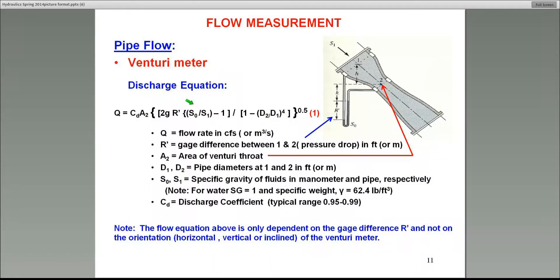A ratio of two specific gravities minus one. The two specific gravities, S0 and S1, are one is the specific gravity of the fluid inside the manometer, which in this case is labeled as S0, shown right there. And S1 is the specific gravity of the fluid going in the pipe itself, whatever it is, maybe water. So obviously you want to use a fluid that doesn't mix with water, so typically most people like to use mercury, which has a specific gravity of 13.6.